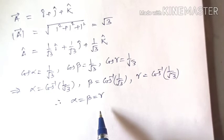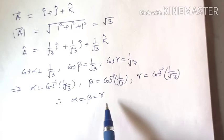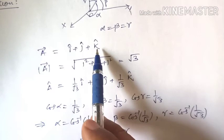Therefore, alpha equals cos inverse (1/√3), beta equals cos inverse (1/√3), and gamma also equals cos inverse (1/√3). Therefore alpha equals beta equals gamma. This shows that the given vector i plus j plus k is equally inclined to the coordinate axes.